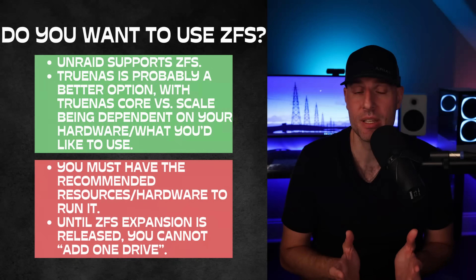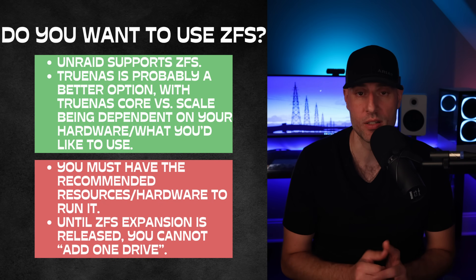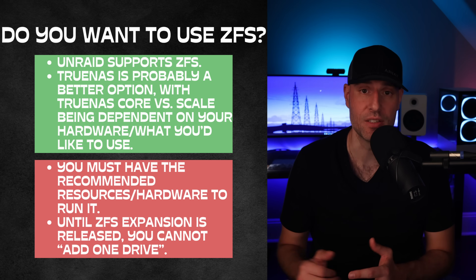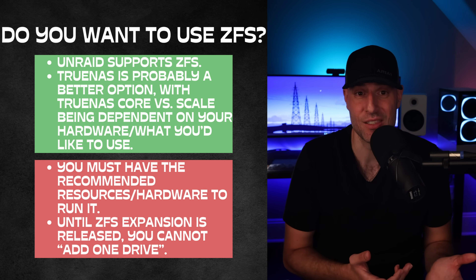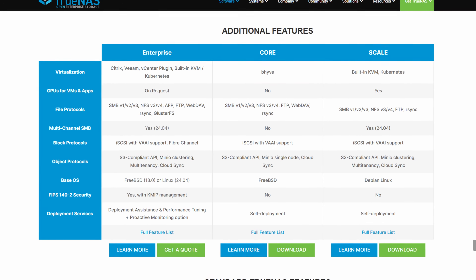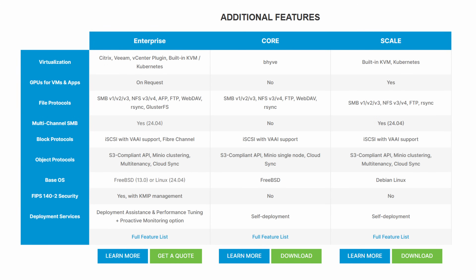Selecting a NAS operating system ultimately comes down to one question: do you want to use ZFS, and will you have the recommended system resources for it? If you do, you can use TrueNAS Core, Scale, or even Unraid — but I'd probably lean towards TrueNAS, as TrueNAS is designed to run ZFS and that's it. You'll have to compare TrueNAS Core and TrueNAS Scale to determine which is best for you, but I'd probably lean towards TrueNAS Scale, as iXsystems seems to be pushing it harder and Core seems to be in a long-term support phase. With that said, long-term support isn't bad — since TrueNAS Core is essentially FreeNAS, it's been around for close to 20 years and has supported ZFS for close to 15 years. So if stability is important, TrueNAS Core is a great option. You may have some hardware compatibility issues with TrueNAS Core, and if you do, that's where TrueNAS Scale will shine.